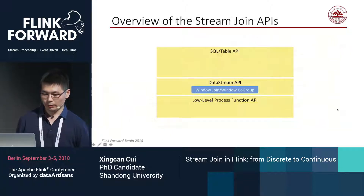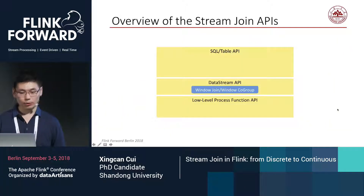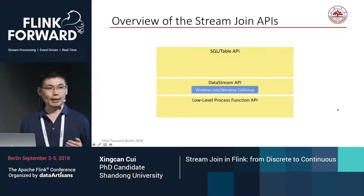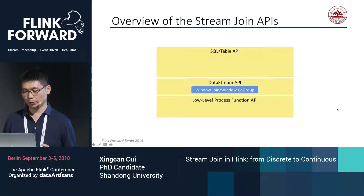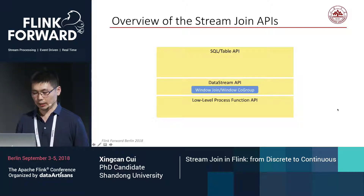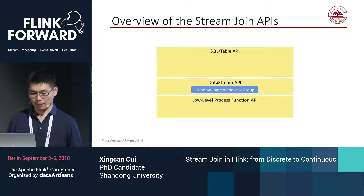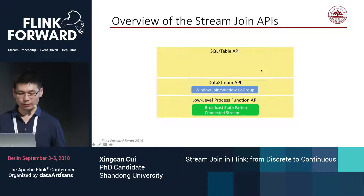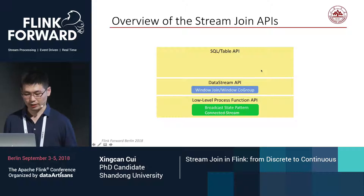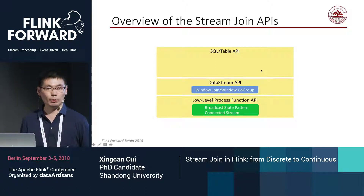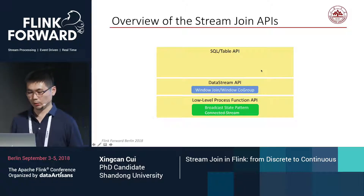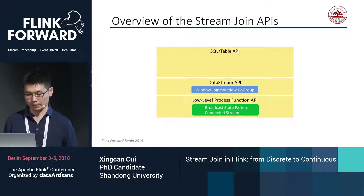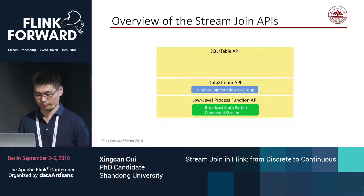Next, let's look at some stream join-related low-level APIs. The broadcast state pattern is a variant of the connected stream — I'll cover the broadcast state pattern here and leave connected streams to the next part.